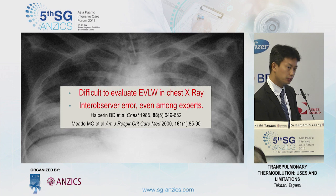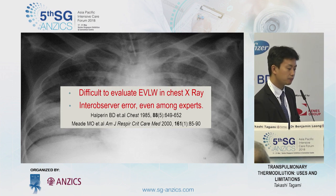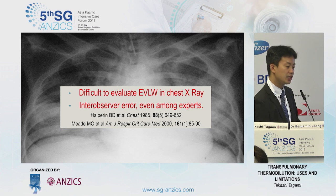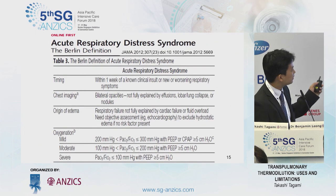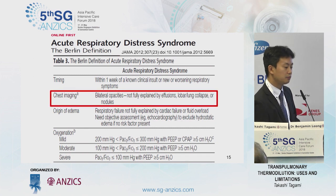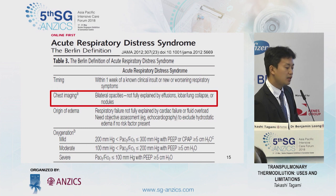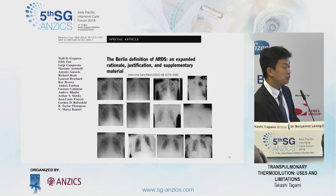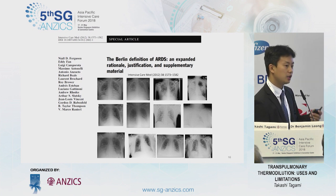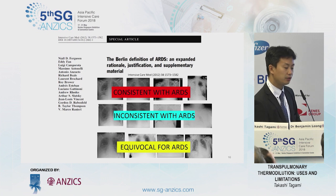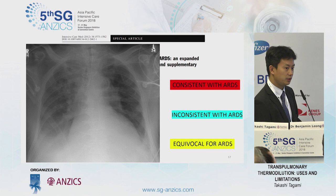However, it is sometimes too difficult to evaluate extravascular lung water at the bedside. The interpretation of chest X-ray is limited by a degree of subjectivity, and intra-observer error exists even among experts. We must interpret chest X-ray accurately, because the current Berlin definition requires its interpretation. The panel of the Berlin definition provided typical X-rays classified as consistent with ARDS, inconsistent with ARDS, and equivocal for ARDS. However, at least for me, it is still difficult to interpret these chest X-rays, even the typical ones.